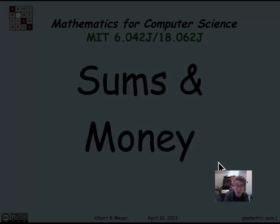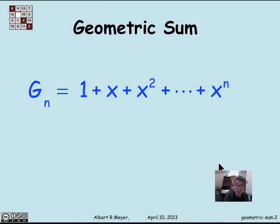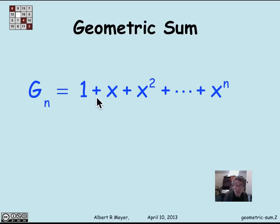Let's begin with a geometric sum. The standard form is: geometric sums of the form 1 plus x plus x squared, up through the nth power of x. Notice that 1 is actually x to the 0, so we're taking the sum from k equals 0 to n of x to the k. What I'd like to do is find a nice closed form for this without those ellipses and a growing number of terms n. And there's a simple trick.